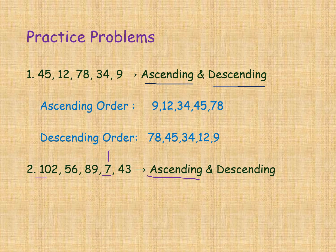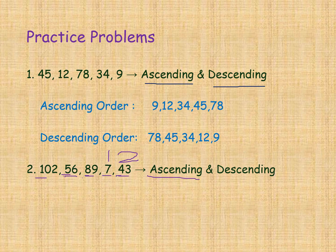Next, we have 56, 89, and 43 — all two-digit numbers with no hundreds place. We compare tens places: 5, 8, 4. The smallest tens digit is 4, so 43 comes in second place. Then 56 and 89 — tens digits are 5 and 8. Five is smaller, so 56 comes third. Then 89 is the next, which is smaller than 102 — so 89 is fourth place, and 102 is the fifth place in ascending order.